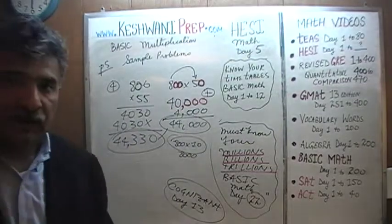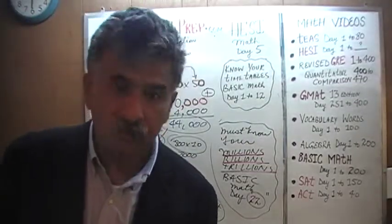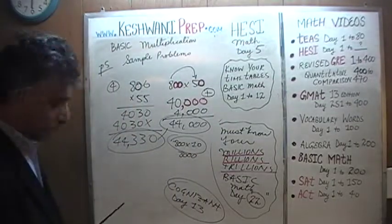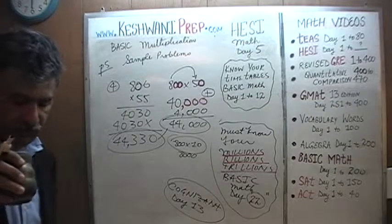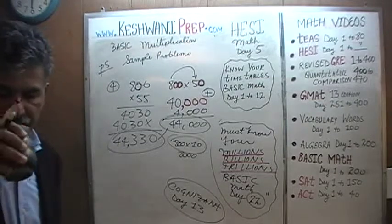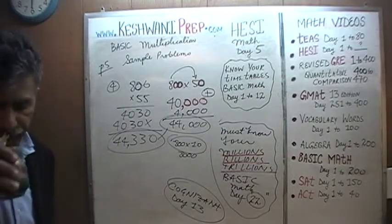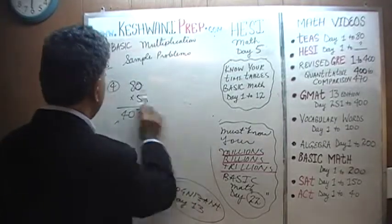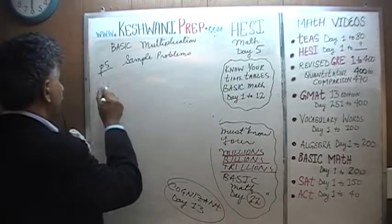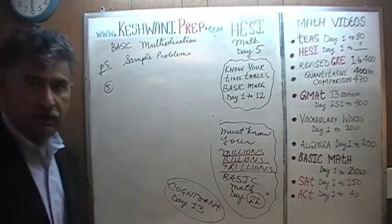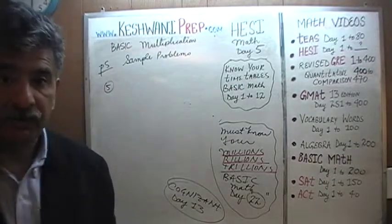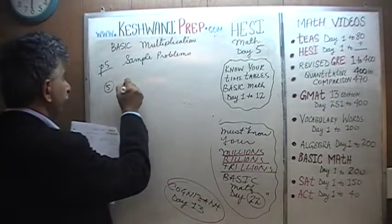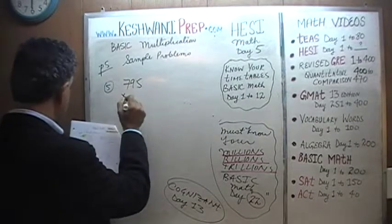The idea is to get the highest score possible with the least amount of work. Number 5: see if you can do the estimation yourself — pause the video and try it. We are told 795 times 14.